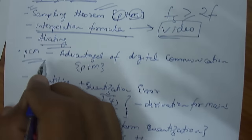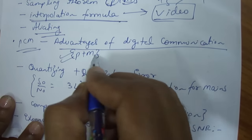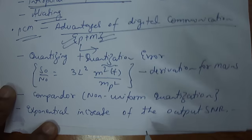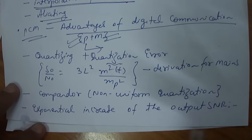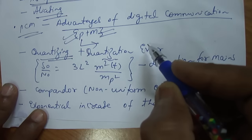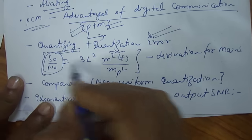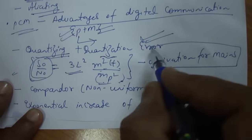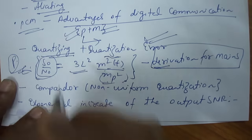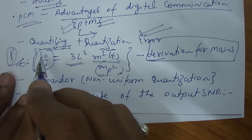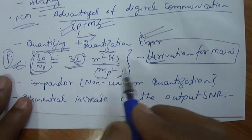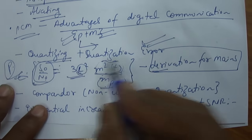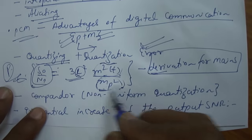What is pulse code modulation? What are the advantages of digital communication? This is important for both prelims and mains — you will be asked why digital communication is preferred over analog communication, with reasons 1, 2, 3, 4, 5, and you will be asked which combination is correct. Then what is quantization and what is quantization error? The signal-to-noise ratio formula is 3L²·M²_mean / M²_peak. In PCM, SNR is directly proportional to the number of quantization levels L and to the mean square value of the message signal, and inversely proportional to the peak value of the message signal.